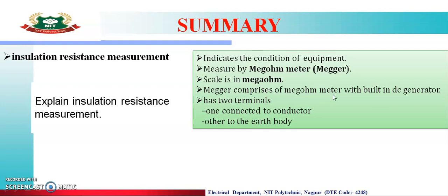The megger is made up of a megohm meter and a DC generator. It has two terminals — one terminal is connected to the conductor whose insulation resistance we need to measure, and the other terminal is connected to the earth body. This is about the insulation resistance measurement.